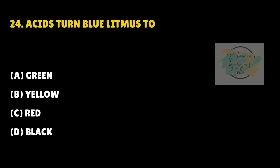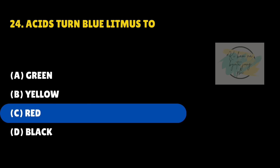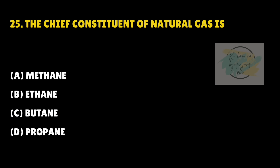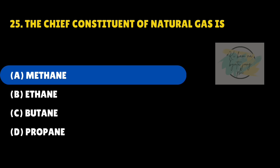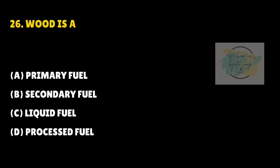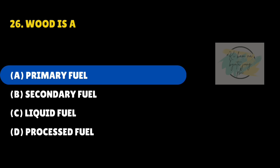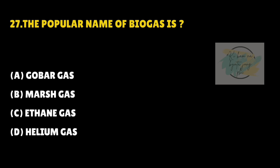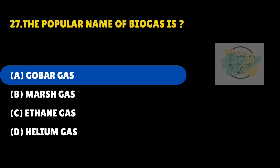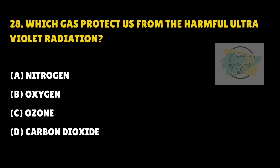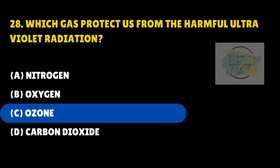Acid turns blue litmus to — answer is C — Red. The chief constituent of natural gas is — answer is A — Methane. Wood is — answer is A — a primary fuel. The popular name of biogas is — answer is A — Gobar gas. Which gas protects us from harmful ultraviolet radiation? Answer is C — Ozone.